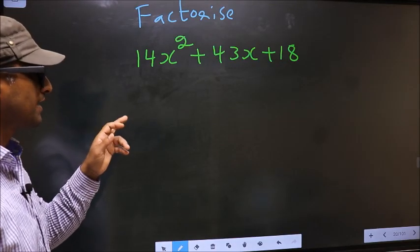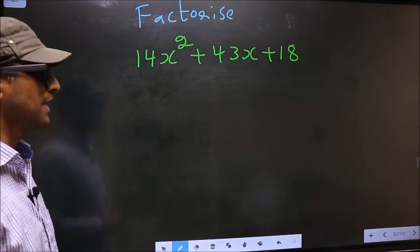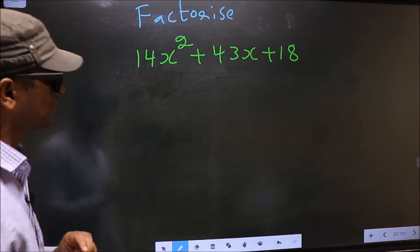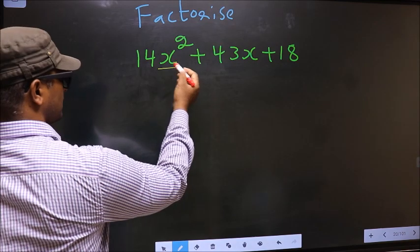Factorize 14x² + 43x + 18. To factorize, step 1: coefficient of x², that is 14 here.